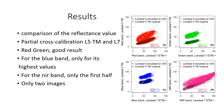Now let's take a look at the results. This graph shows on the X axis the L7 reflectance and on the Y axis the corresponding L5 reflectance. One graph represents one band. The dashed line is the 1-to-1 line. The dark color represents the original 30 meter L5 value and the clear color the emulated L5 values at 15 meter spatial resolution.